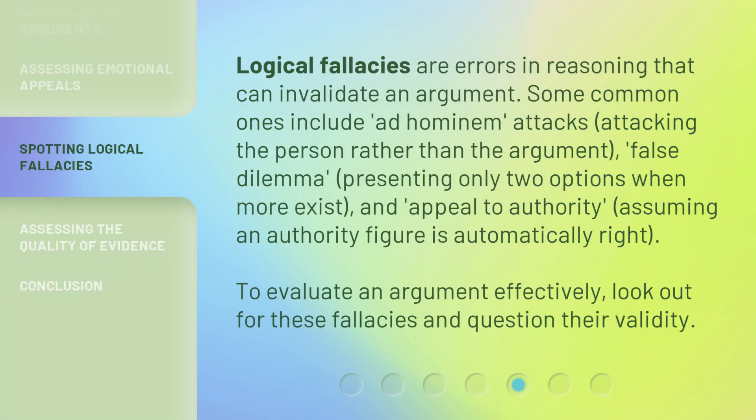Logical fallacies are errors in reasoning that can invalidate an argument. Some common ones include: ad hominem attacks — attacking the person rather than the argument; false dilemma — presenting only two options when more exist; and appeal to authority — assuming an authority figure is automatically right. To evaluate an argument effectively, look out for these fallacies and question their validity.